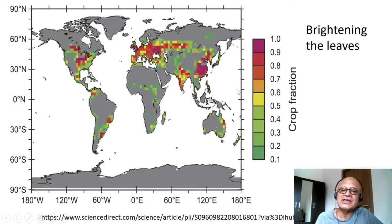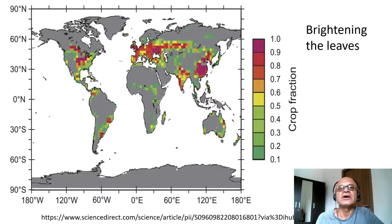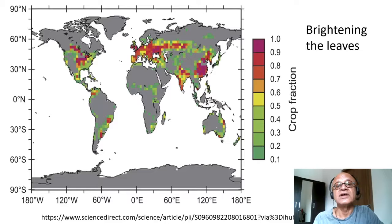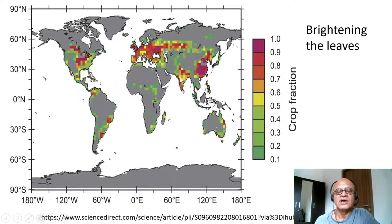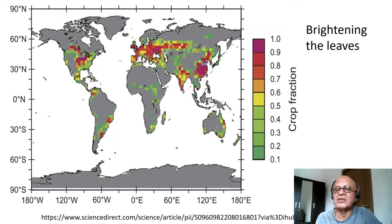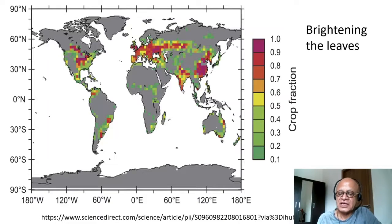The next idea in terms of solar mirrors is called brightening the leaves — genetically modifying the leaves, the wax they release, and so on to change the albedo. Vegetation tends to have a very dark surface albedo, much darker than deserts or urban areas. This is the crop fraction derived from satellite data, and you can see substantial coverage over India, China, Europe, Eurasia, North America, and South America, giving a sense of how much area is potentially available for albedo modification.